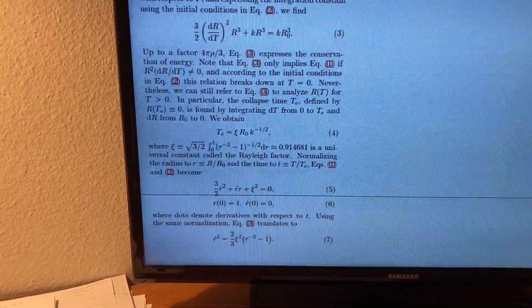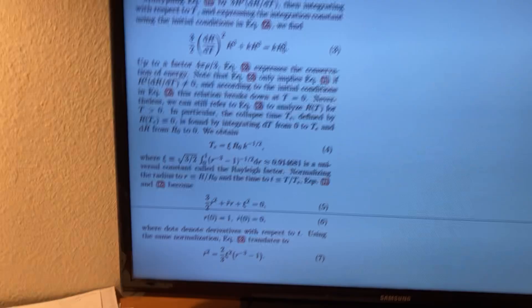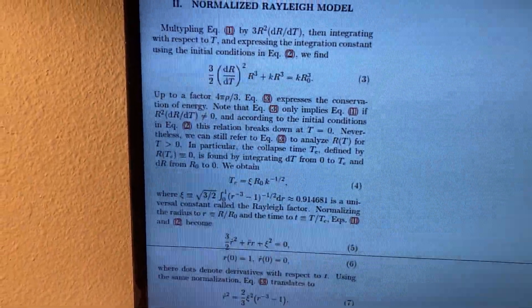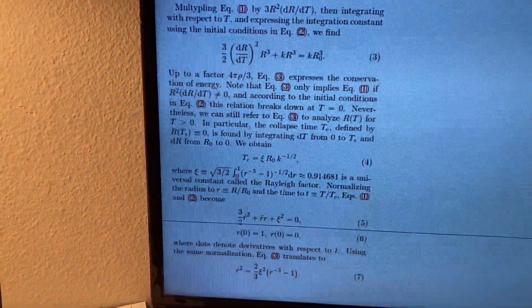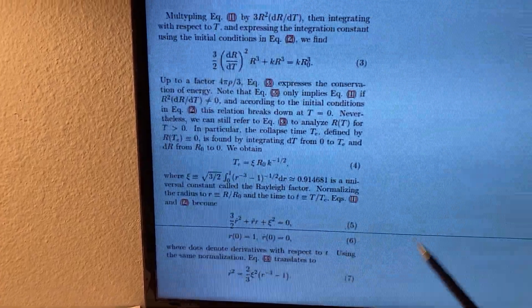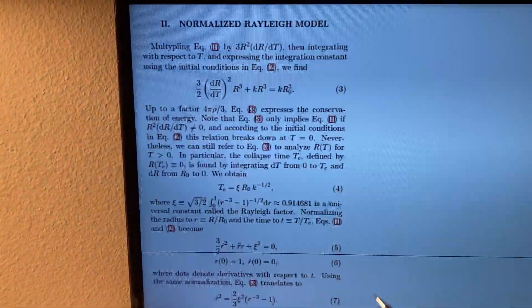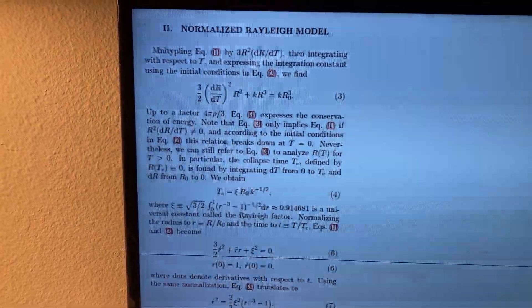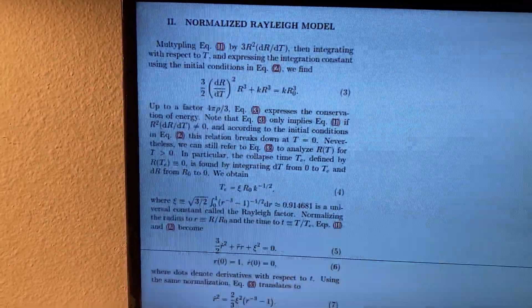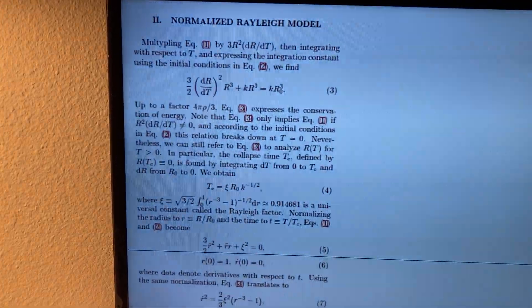So Obrechkov observed that since r of 1 equals 0, and the first derivative includes r to the negative third power, that would be 1 over 0, and so the first derivative is not defined at t equals 1, and thus the solution function r is not analytic at t equals 1.